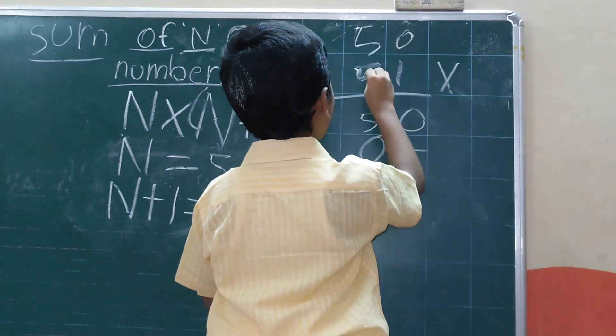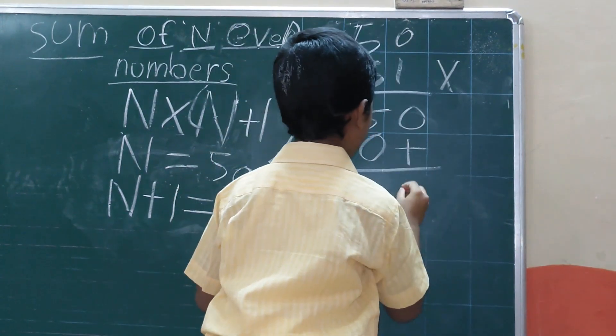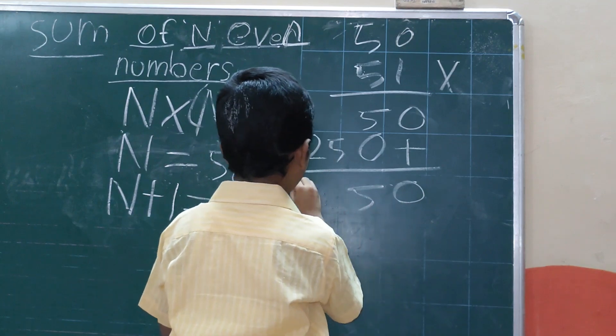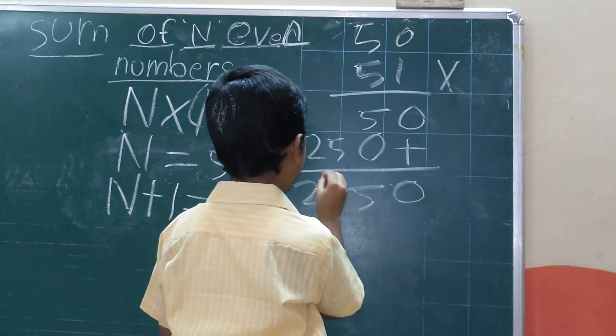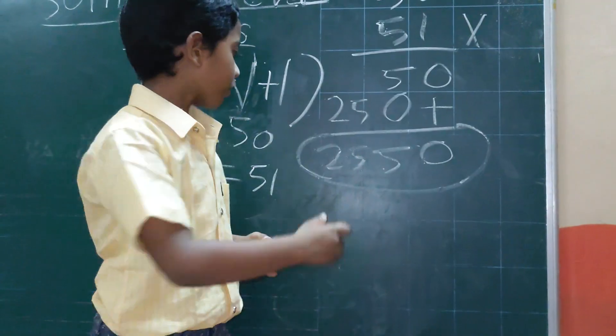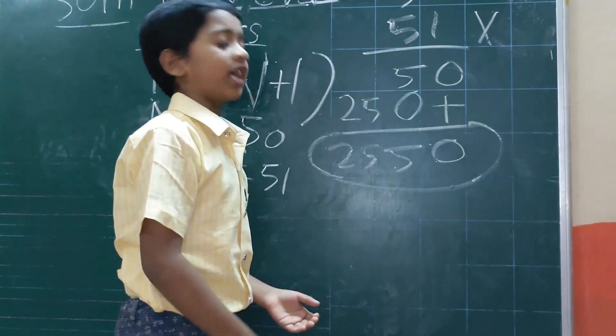50 times 51, 5 times 5 is 25, then 2550, this is the answer. 2550, this is the answer. We can use this formula for any even numbers.